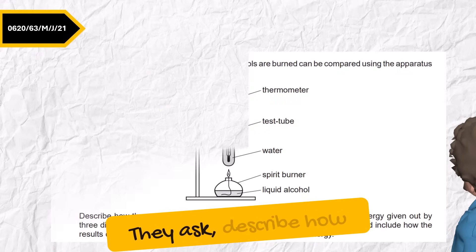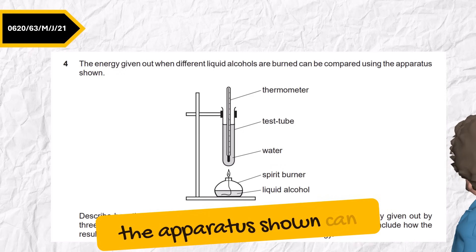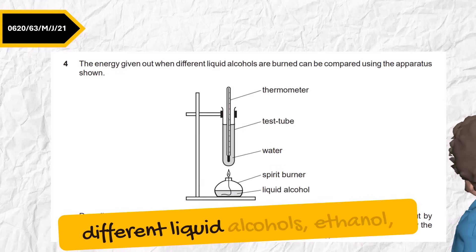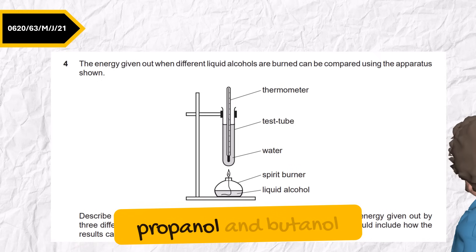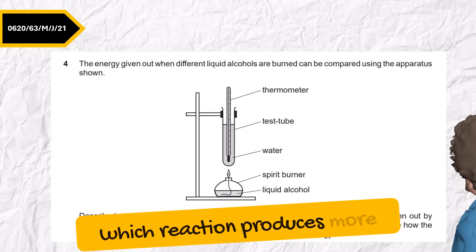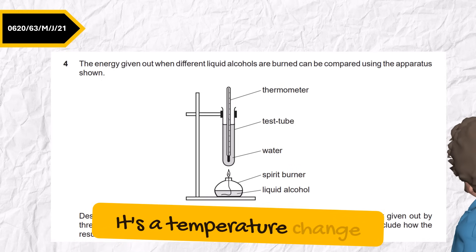June 2021, variant 3. They ask, Describe how the apparatus shown can be used to compare the amount of energy given out by three different liquid alcohols. Ethanol, propanol, and butanol. Here we are measuring which reaction produces more heat. It's a temperature change experiment.